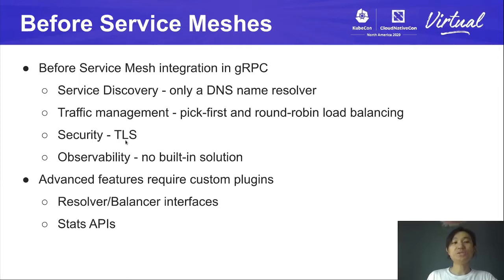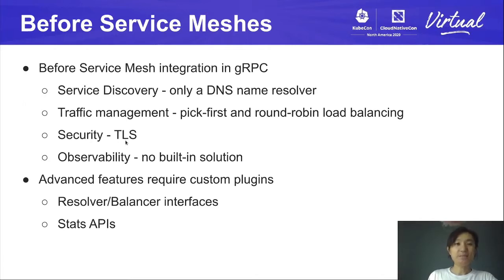TLS is also supported in gRPC, but it's only configurable at startup time. For observability, there's no built-in support, but there's an OpenCensus plugin. Of course, you can write your own plugins to get those advanced features, but writing and maintaining plugins can be a lot of work. So because of those problems, there's a need to integrate gRPC with service mesh.